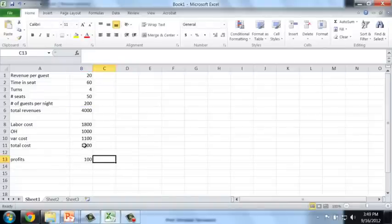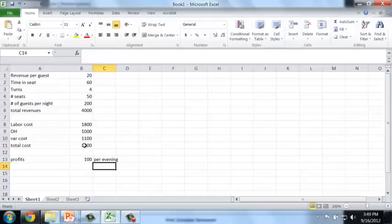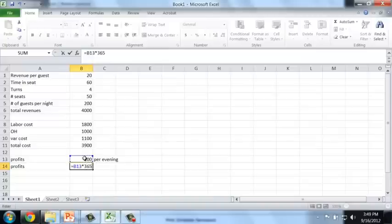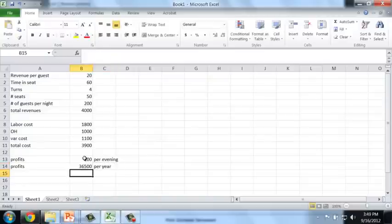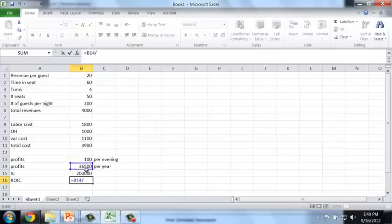Here, we have to be very careful. This is because this is the profit per evening. If I want to compute a return on invested capital, returns are typically computed on an annual basis. And so, my profits per year are simply 365 times my profits per evening. That gives me then my ROIC as the ratio between the profits that I have here and the invested capital that I just squeezed in here. That is 18.25 percent.